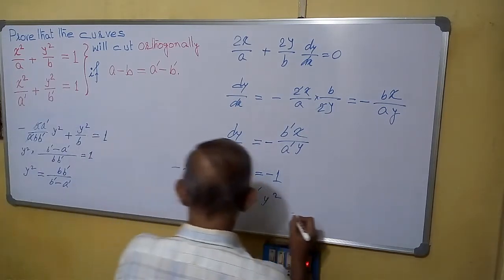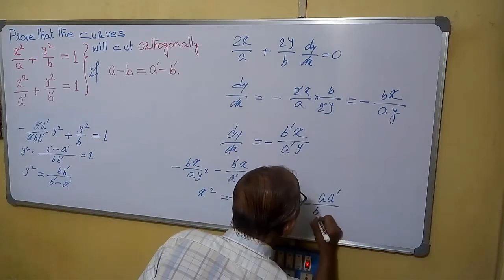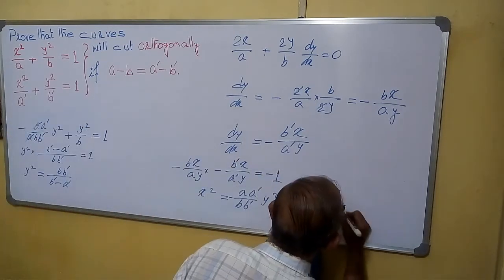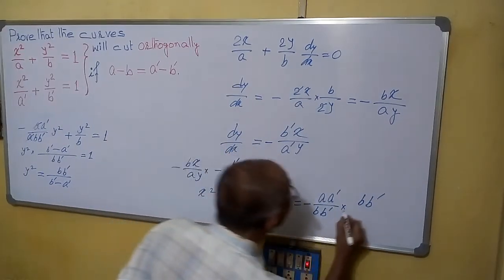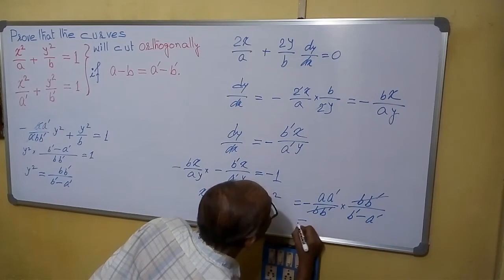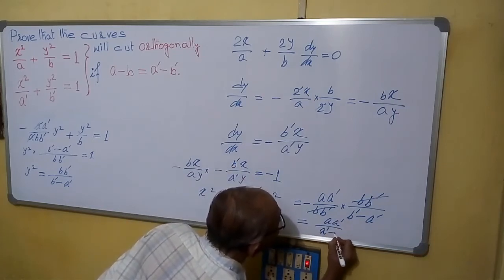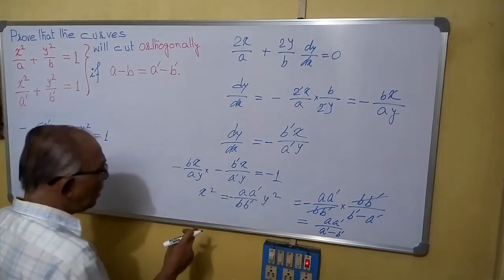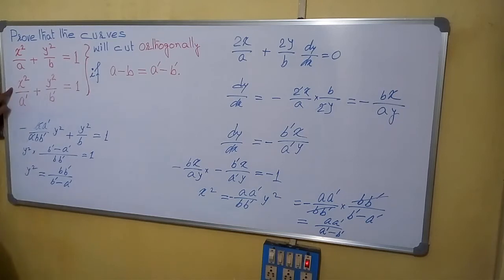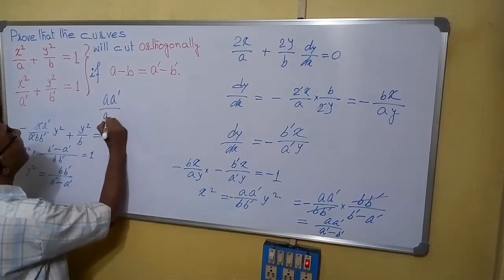Now putting this value of y squared, we have to find x squared. So x squared equals to minus A A dash by B B dash into y squared, which is B B dash by B dash minus A dash. We can cancel B B dash, so x squared equals to A A dash by A dash minus B dash.